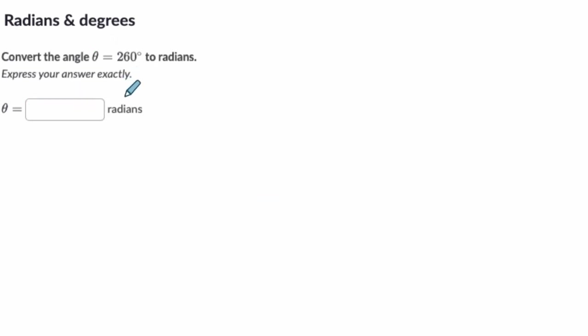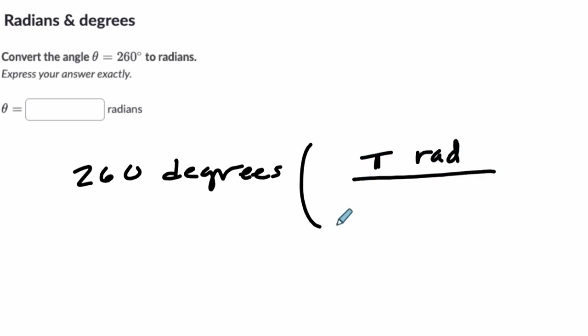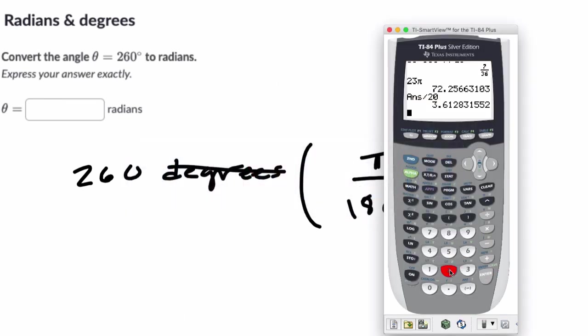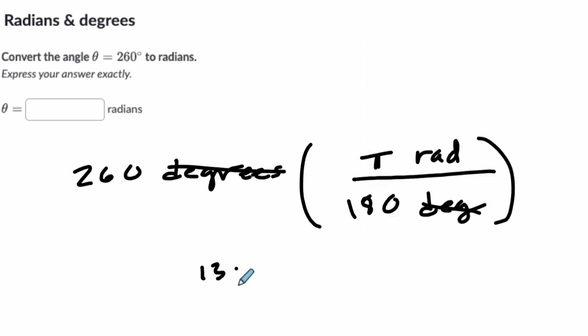Let's keep going. Here we have 260 degrees to radians. So we want to cancel out the unit's degrees. So we multiply it by pi radians over 180 degrees. So the degrees cancel, and I get 260 times pi over 180. And on the calculator, I'm just going to put in 260 divided by 180. And I go to math, and the first choice is fraction. And I get 13 over 9. So it's 13 times pi over 9. And that's the answer I get here.